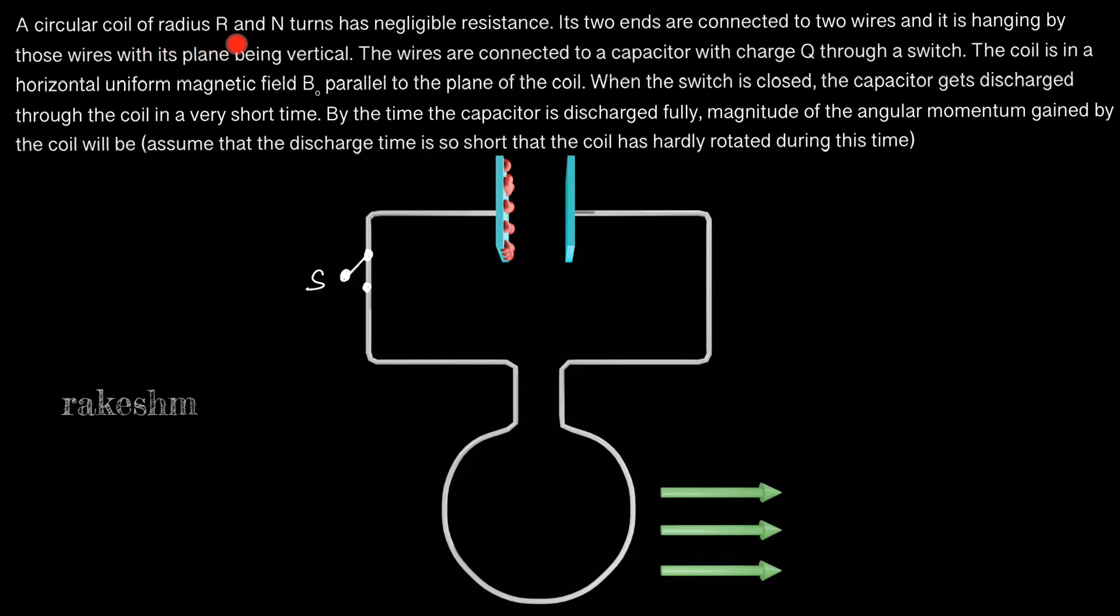A circular coil of radius R and N turns has negligible resistance. So this is a circular coil with radius R, N turns, and negligible resistance, meaning very small resistance. Its two ends are connected to two wires and it is hanging by those wires with its plane being vertical. This coil is connected to these two wires and is in the vertical plane.